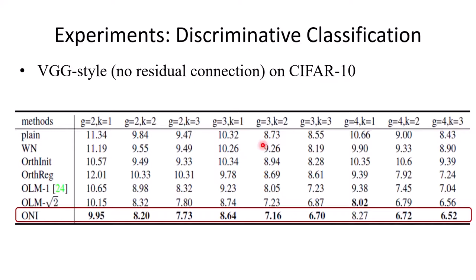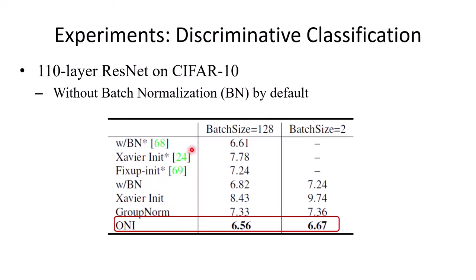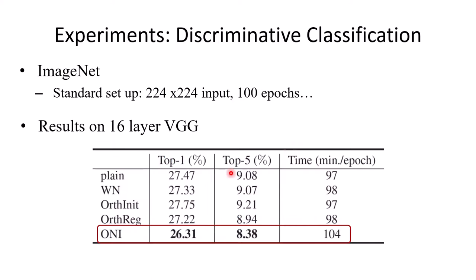We first conducted experiments on VGG-style network for CIFAR-10. We evaluated the depth and width of the network. We can find that our ONI has better performances. We also use a residual network. We do not use batch normalization by default. We can find that our ONI has better performance than other baselines, and it is not sensitive to batch size.